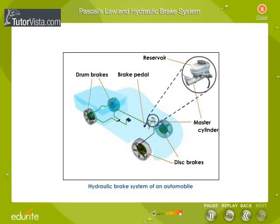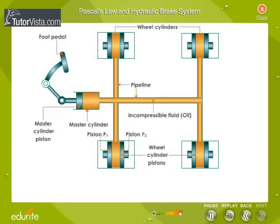Here you can see the hydraulic brake system of an automobile. It consists of a pipeline containing fluid, one end of which is connected to the master cylinder fitted with a piston attached to the foot pedal. The other end of the pipeline is connected to the wheel cylinder.